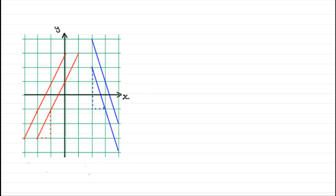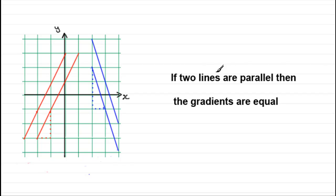So what I'm saying then is, in short, that if two lines are parallel, then the gradients are going to be equal. This might have seemed obvious to quite a few of you, but it is a concept that you're going to use time and time again when you're asked to find the equations of two or more parallel lines. You use that idea that the gradients are equal.